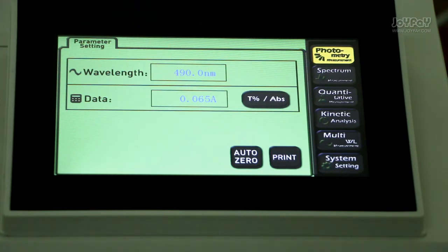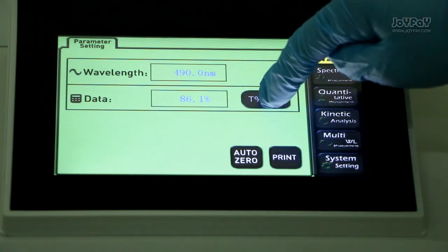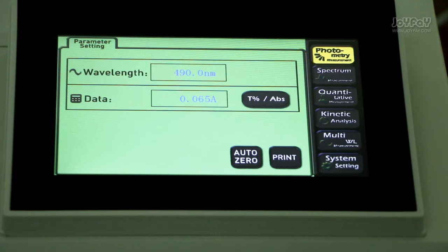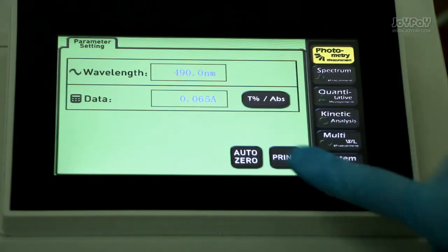By pressing T or ABS, you can exchange transmittance to absorbance. You can calculate the concentration of your energy. Press print button to print the result. Very easy for you to record the result.